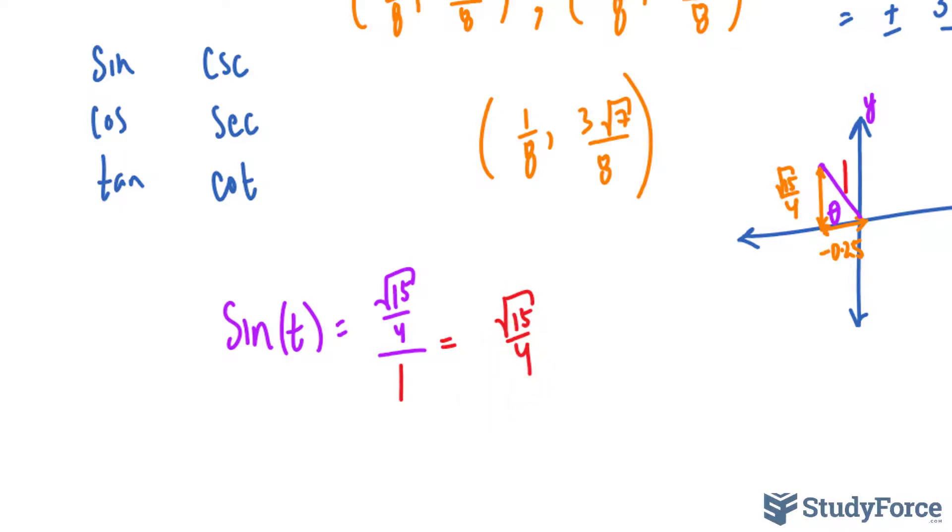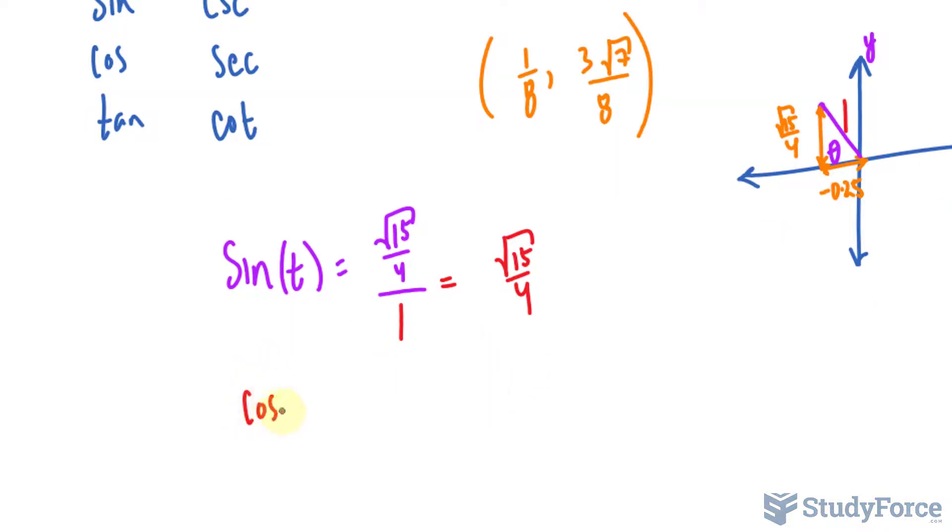And you would repeat this for all of them. Cosine is adjacent over hypotenuse. The adjacent is negative 0.25 over 1. So you'd write down negative 1 over 4. Finally, tangent is opposite over adjacent.